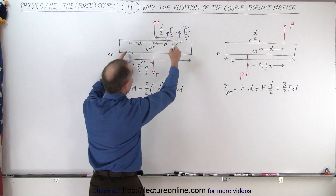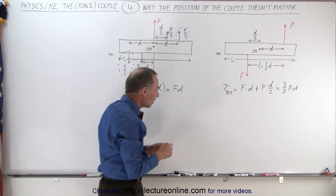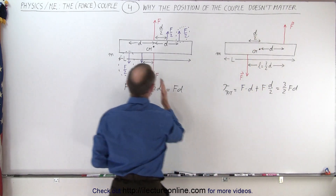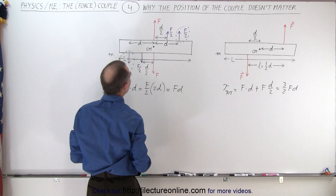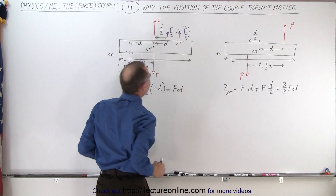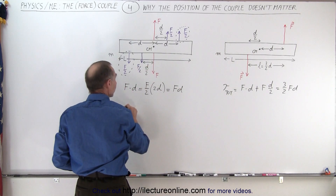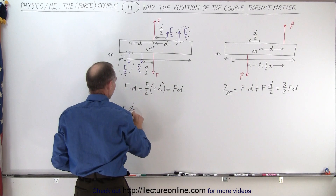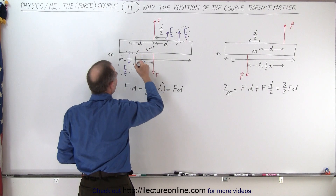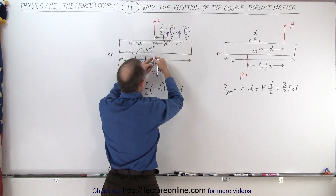So you can see that this couple will cause the rotation about the center of mass, and we see that it's equivalent to that force. We'll do the same for the second force — take this force and move it to the location where the line of action goes to the center of mass of the board, and then add two forces which form a couple equally distant from the center of mass.